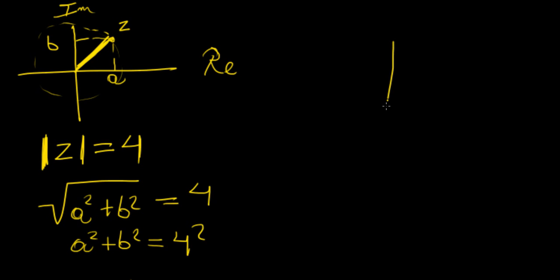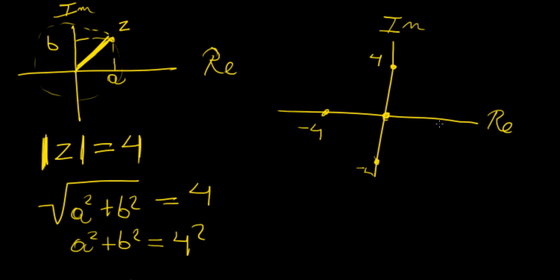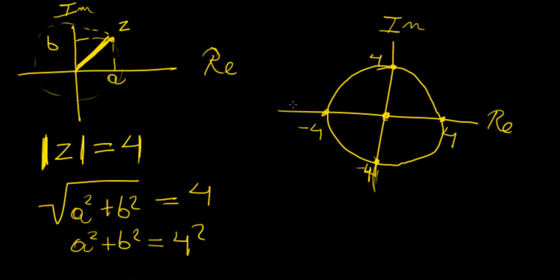If we wanted to plot this on the complex plane — with real and imaginary axes — it's centered at the origin with radius 4, so we mark the points 4, minus 4, and 4 in each direction. We get a circumference spanning all those points. I apologize for the drawing — it's hard to draw circles on this tablet — but essentially this circle represents all the complex numbers that lie on that circumference.